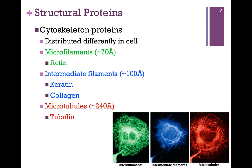It's not important that you remember the exact numbers — just remember their relative size. In this illustration from your book on the bottom right, these three types of structural proteins have been stained with different fluorescent tags. You can see that they localize to different areas within the cell, and this relates to their function. We'll look first at the structure and then see how that relates to their biological function.